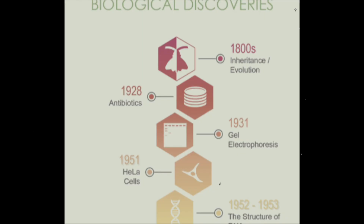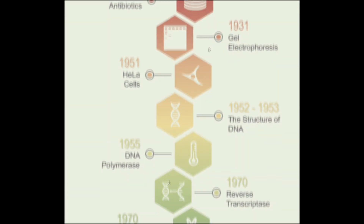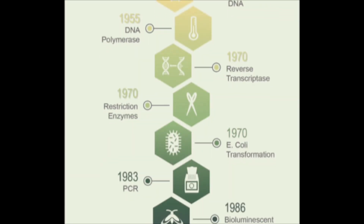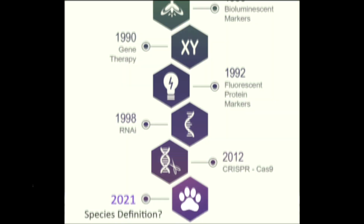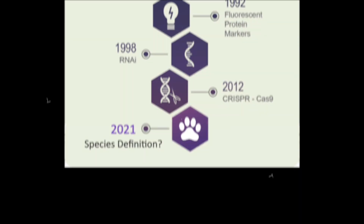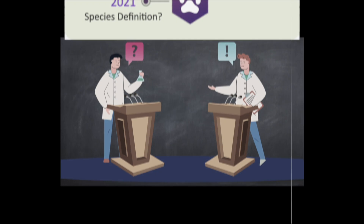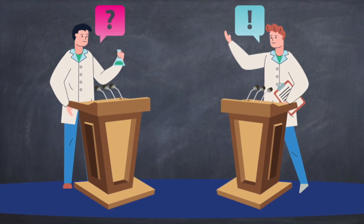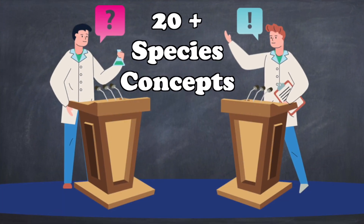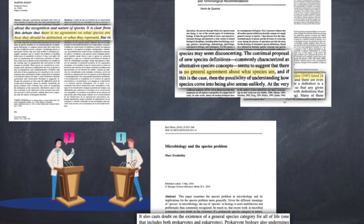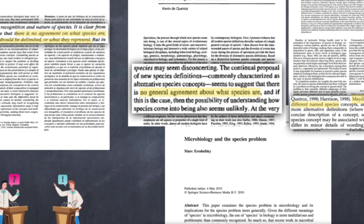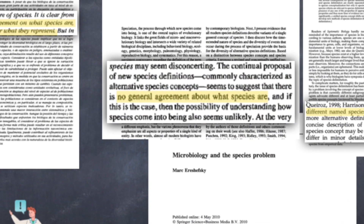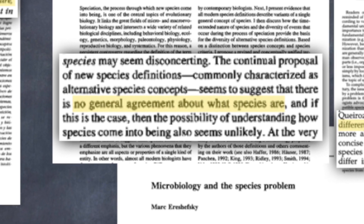Well, it turns out that in the centuries since the term species was coined, biologists still haven't come up with a consistent definition for the term species. This topic has been hotly debated in the biology world for decades, with some 20-plus species concepts being employed in this duration. But the problem is yet to be solved — there is still no general consensus as to how to define a species.